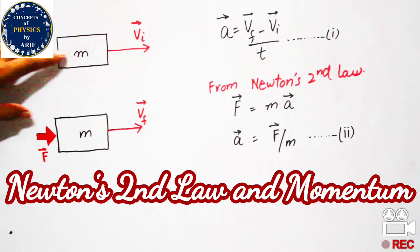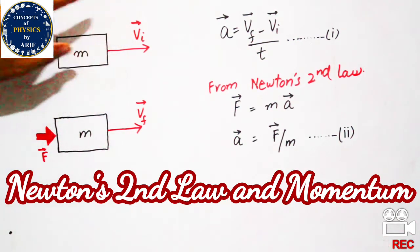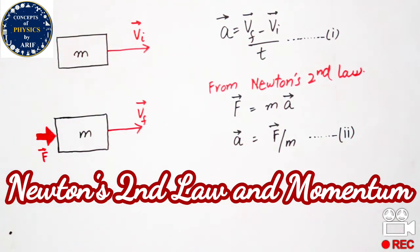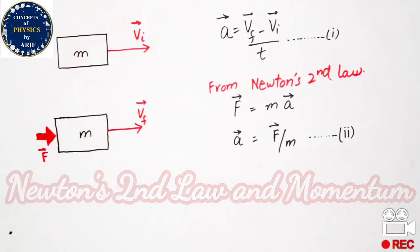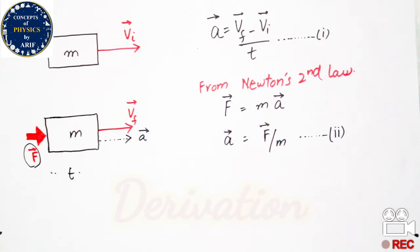Consider a body of mass m moving with initial velocity vi. After some time, an external force F is applied on that body and its velocity may increase or decrease, then it becomes final velocity vf.